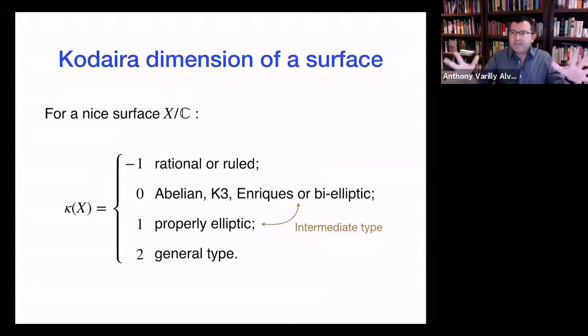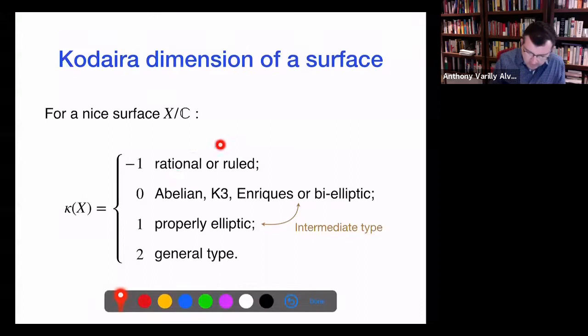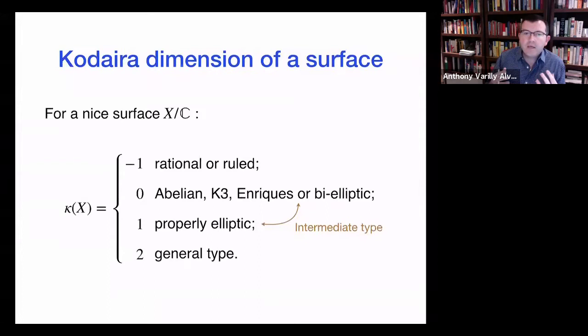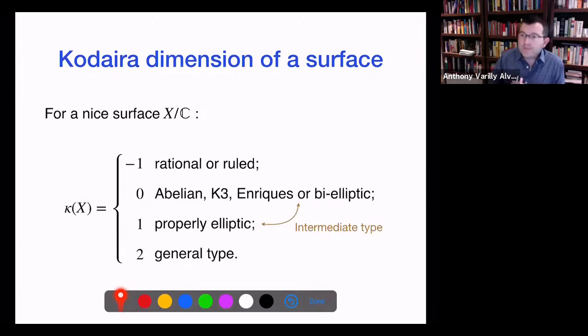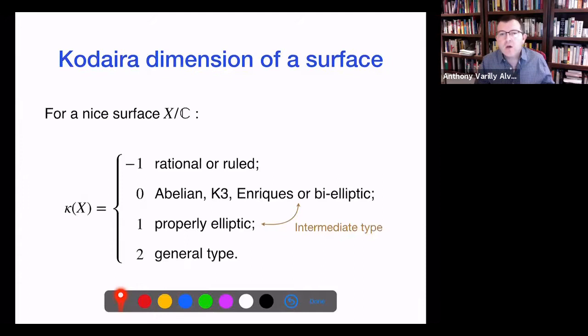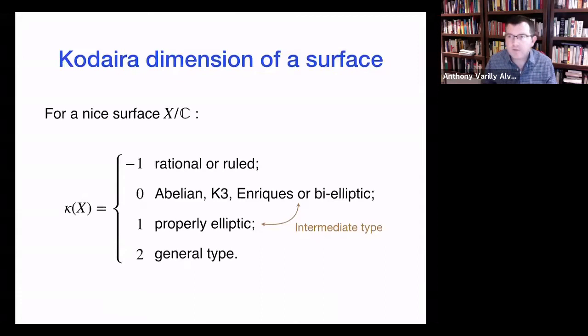When you look at the dimension of a surface, the first branching in the taxonomy gives you four different types. For geometrically rational surfaces, we have a pretty good conjectural picture. General type surfaces have deep conjectures of Lang and Vojta. And K3 surfaces fall into one of the intermediate type ranges in the classification, where there is some hope of developing a reasonably complete conjectural picture and starting to chip away at it. And so this is part of the reason we are looking at these surfaces today.